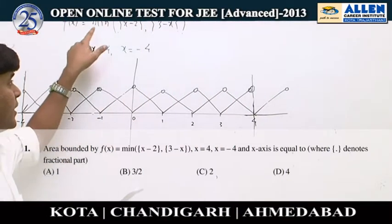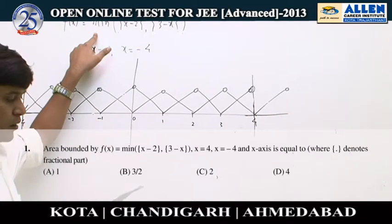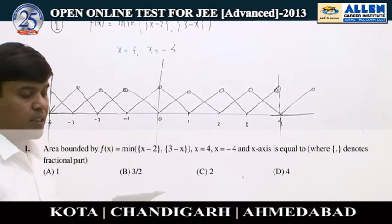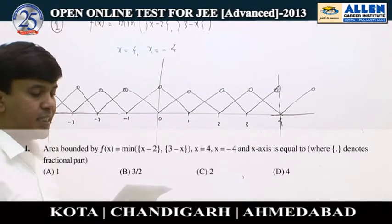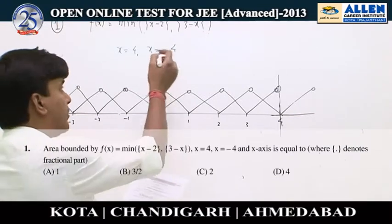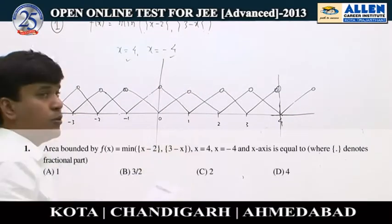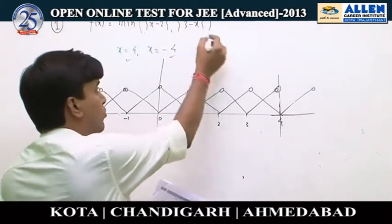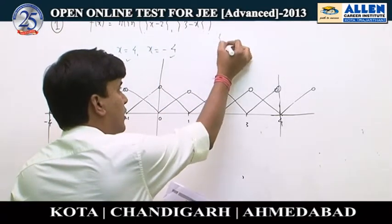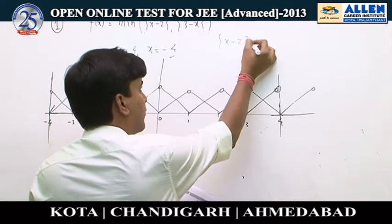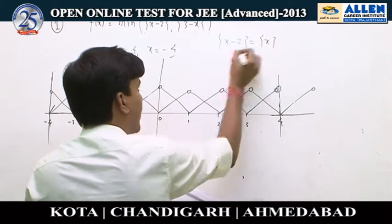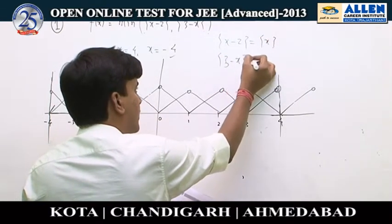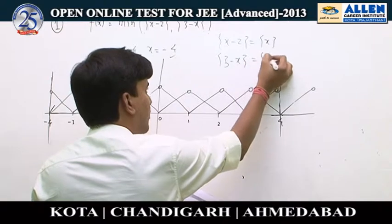We have to find out the area bounded by f(x) = minimum of {fractional part of (x−2), fractional part of (3−x)}, between the lines x = 4 and x = −4. Now, fractional part of (x−2) can be written as fractional part of 2x, and fractional part of (3−x) can also be written as fractional part of −x.